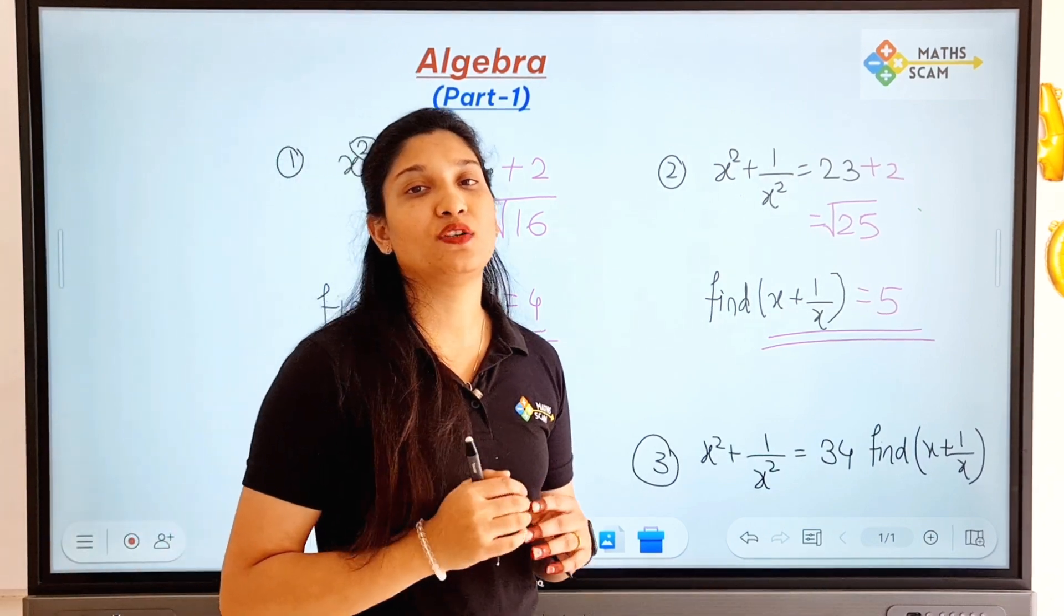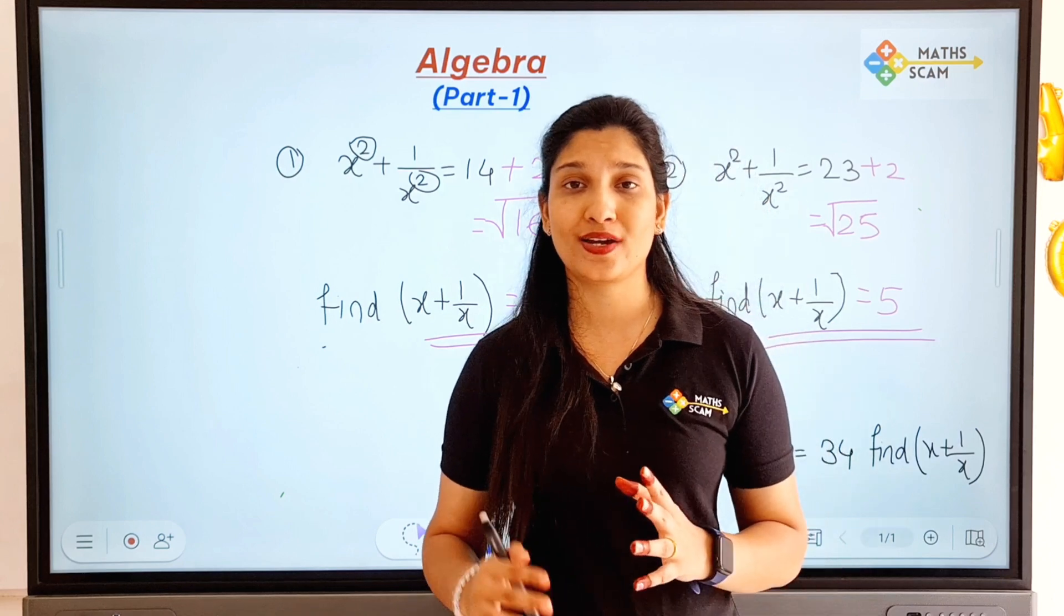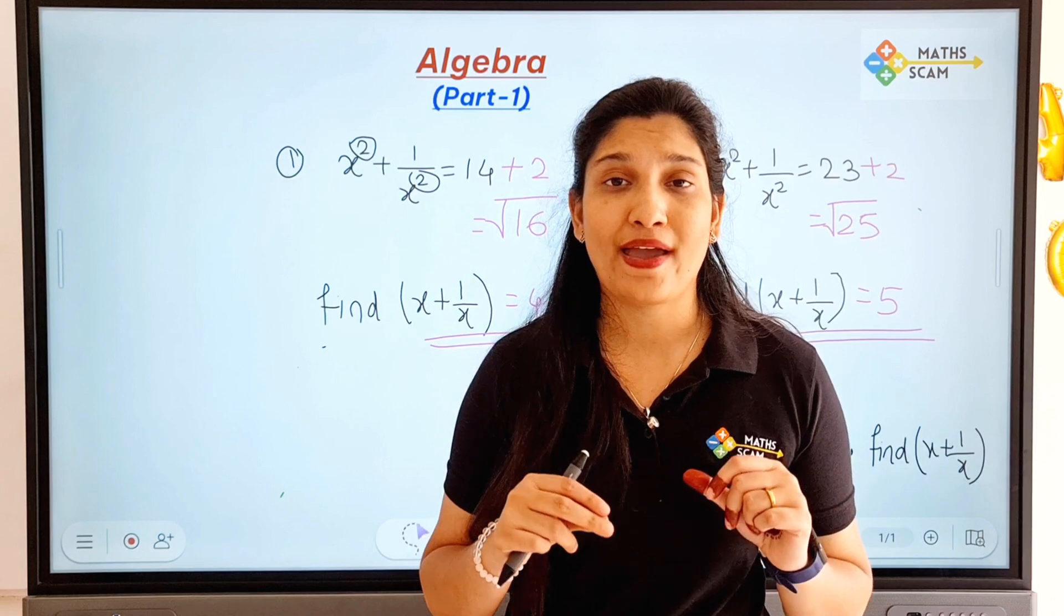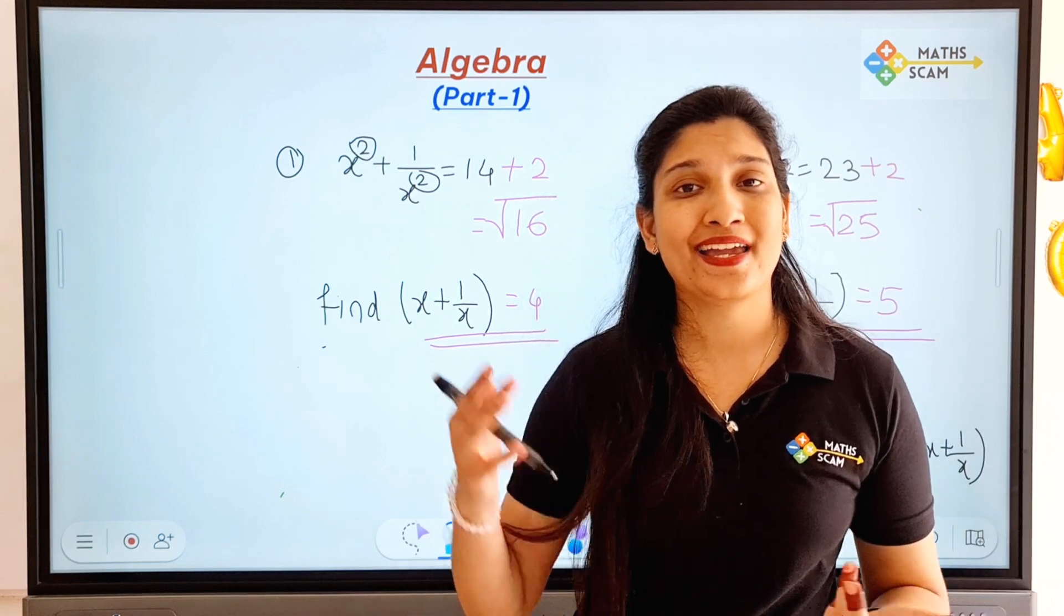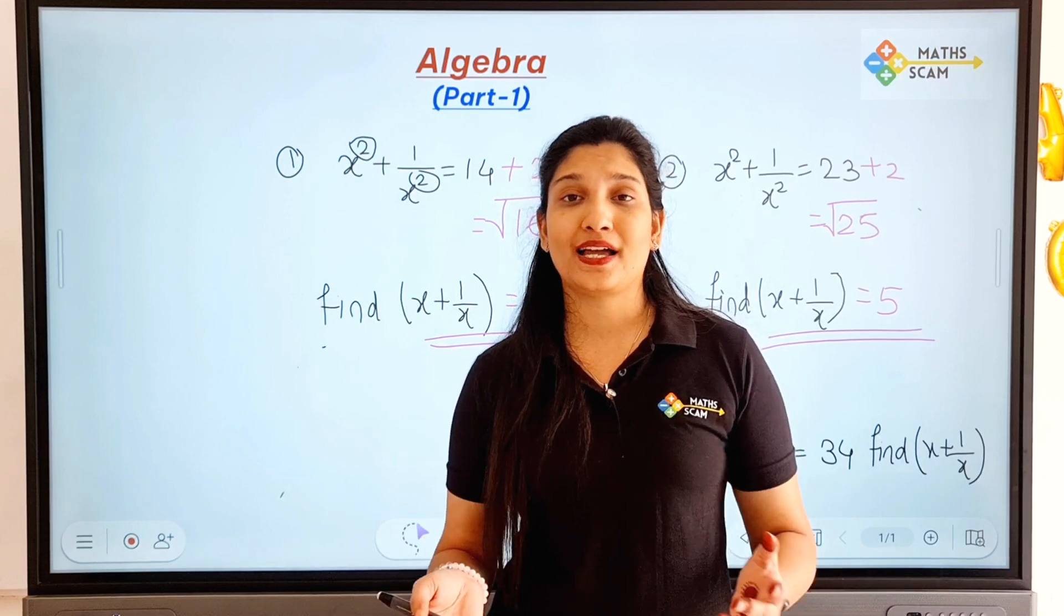What we did is, in the question they have given squares, like x² + 1/x² = 14, okay. So x is just a variable, it can be any variable: y, a, b, c, n, m, f, z, it can be anything.